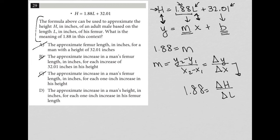Choice D, the approximate increase in a man's height. There we go. We want the height in inches for each 1 inch increase in femur length. So here we are relating height to length. So therefore, D is the right answer.